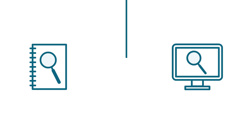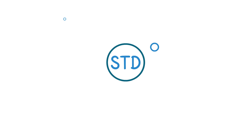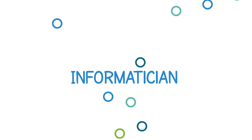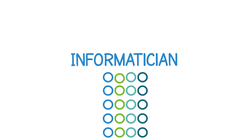Informaticians can translate between staff who work in different disciplines, such as surveillance programs and IT. For example, if the STD program needs its disease data structured in a very specific way, the informatician can help translate this request into standardized technical language IT staff can understand and act upon.